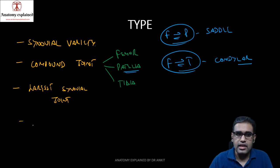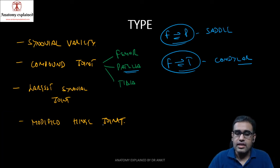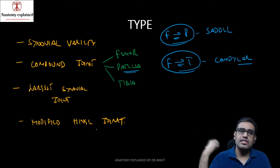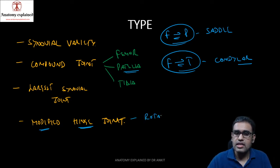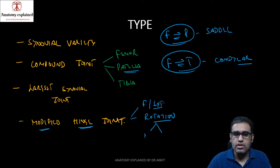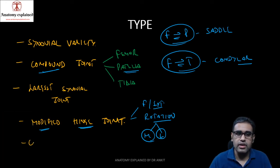Functionally, the knee joint is a modified hinge joint. Hinge joints normally move in one axis only — flexion and extension. The basic movement in the knee joint is flexion and extension, but as it is modified and being the largest joint, there is also a little bit of rotation involved — both medial and lateral rotation — apart from flexion and extension.